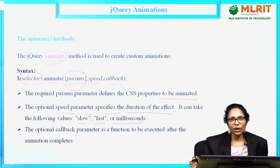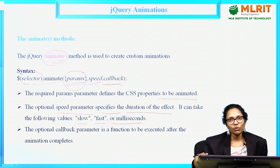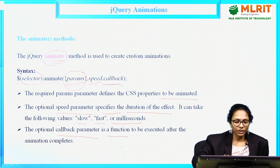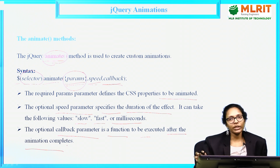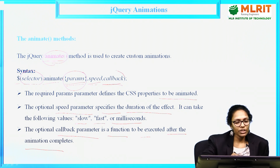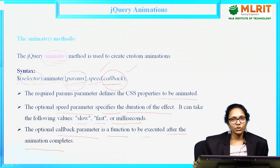You specify how many milliseconds you want to apply that effect. The last parameter is callback — after performing this animation function, what should happen. This callback parameter will be executed after the animation completes. If you want to execute any particular function after completing the animation, that function name you can write as the third parameter. The third and second parameters are optional.